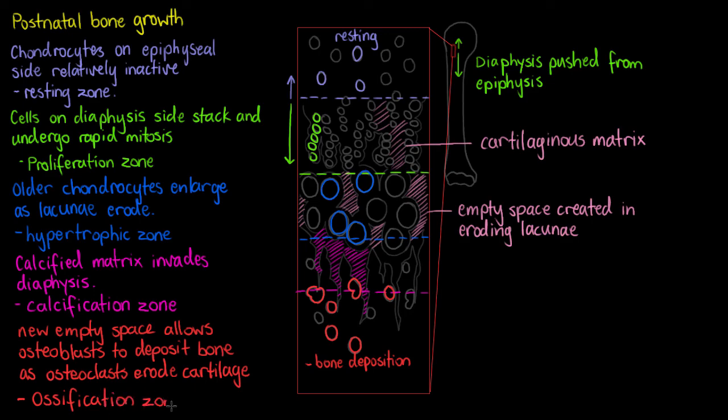Now, as we can see, we've had quite a few different things happen here in our postnatal bone growth. So let's go through them one by one. In our first step, in the active site, we had the proliferation zone where those chondrocytes were stacking.